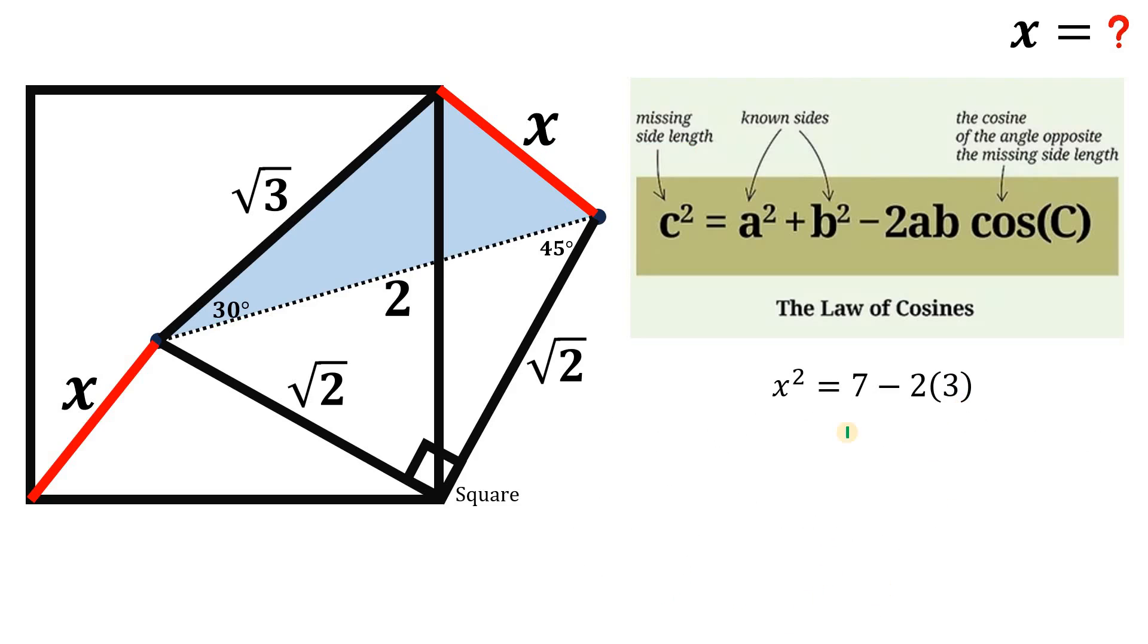Now 2 times 3 is 6 for sure, 7 minus 6 is 1, so x squared equals 1, and if we get the square root on both sides we get the value of x. We disregard the negative value because x here is a side length, so x is equal to 1.